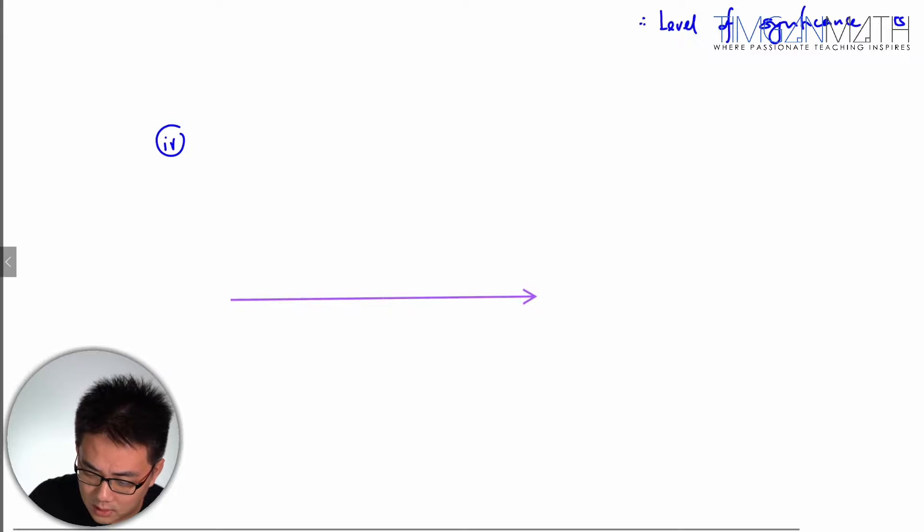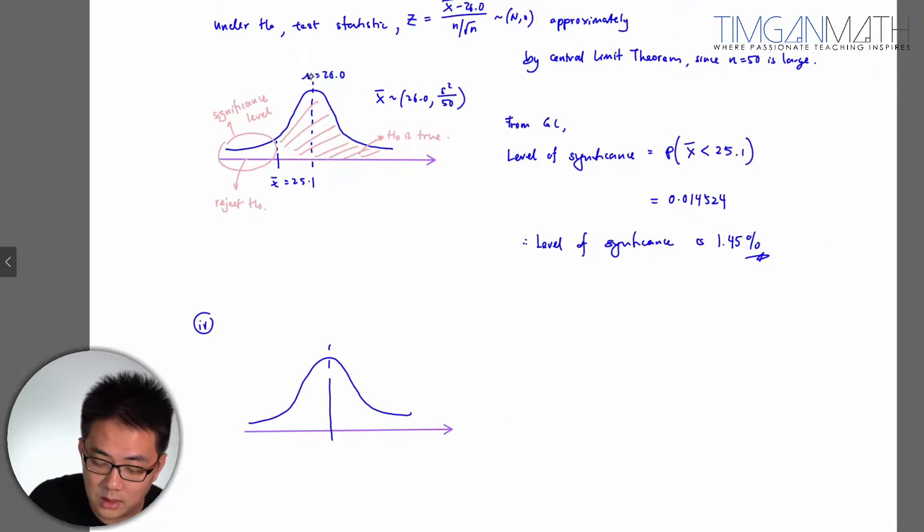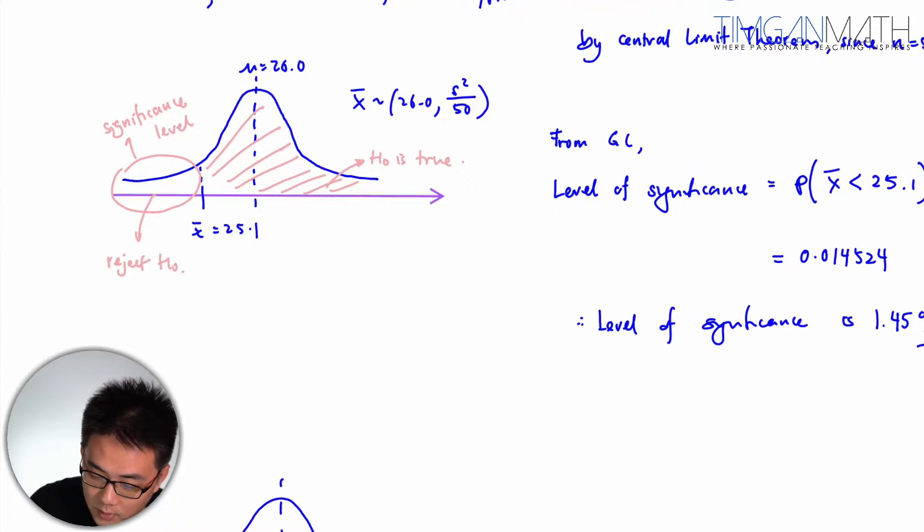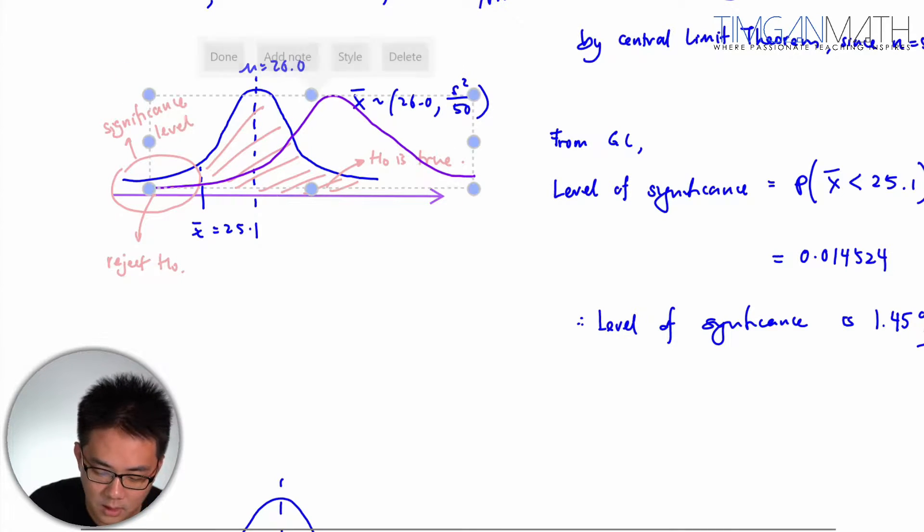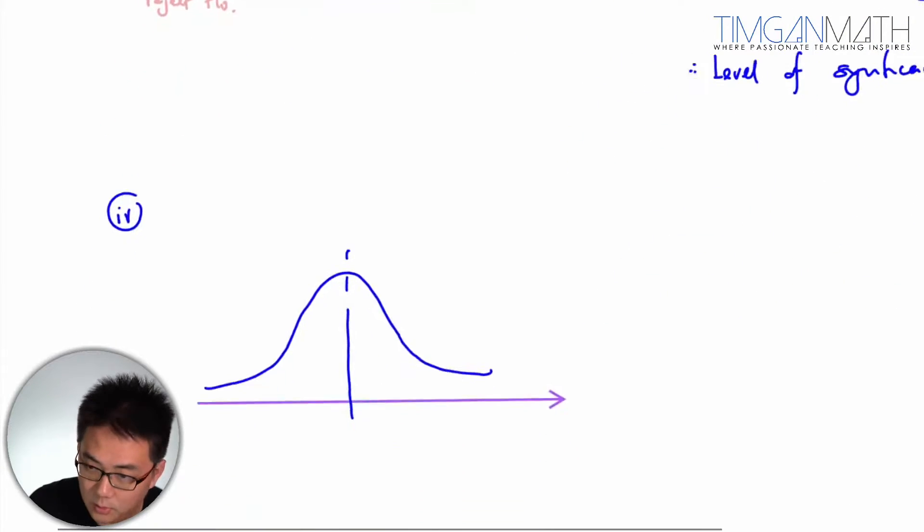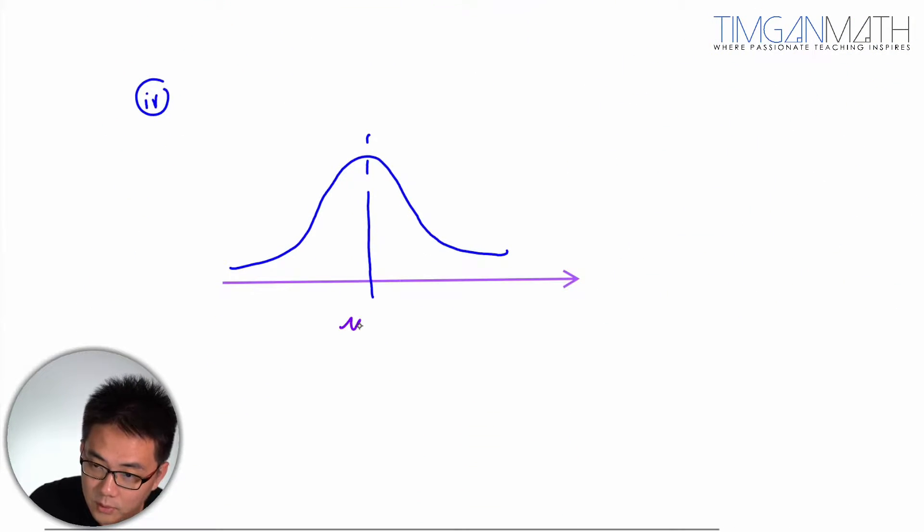So what you need to do is actually just try and understand the concept here. Now that this is more than 26, initially this is 26, right? The middle one. So this is where mu, this is mu more than 26. So meaning to say you need to move the curve to this side here. Like that. So the whole curve will move to this side.